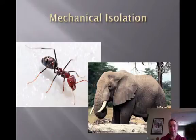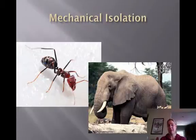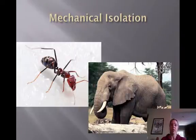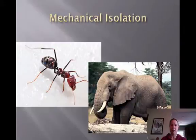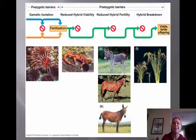Then there's mechanical isolation: basically, if the parts don't fit, it's not going to work. Even if an ant and an elephant were mutually interested, there's really no way those two could actually mate with one another.